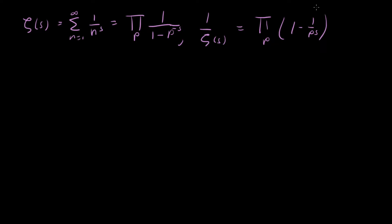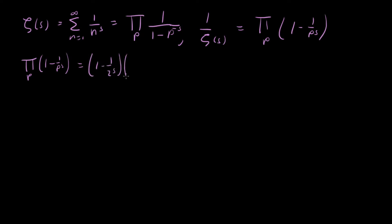What I want to do is take a closer look at this expression and in particular look at some partial products. The first four terms are going to be (1 - 1/2^s), (1 - 1/3^s), (1 - 1/5^s), and (1 - 1/7^s), and then you keep going.